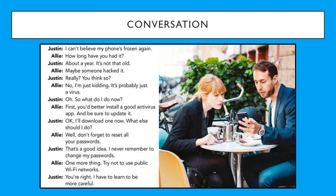This is the conversation for Unit 7. In this conversation we have two people talking about technology problems. Let's listen to them. Page 47, Exercise 7. Conversation: What do I do now? Part A: Listen and practice. 'I can't believe my phone's frozen again.' 'How long have you had it?' 'About a year.' 'It's not that old. Maybe someone hacked it.' 'Really? You think so?' 'No, I'm just kidding. It's probably just a virus.' 'Oh. So what do I do now?' 'First, you'd better install a good antivirus app. And be sure to update it.' 'Okay, I'll download one now. What else should I do?' 'Well, don't forget to reset all your passwords.' 'That's a good idea. I never remember to change my passwords.' 'One more thing. Try not to use public Wi-Fi networks.' 'You're right. I have to learn to be more careful.'